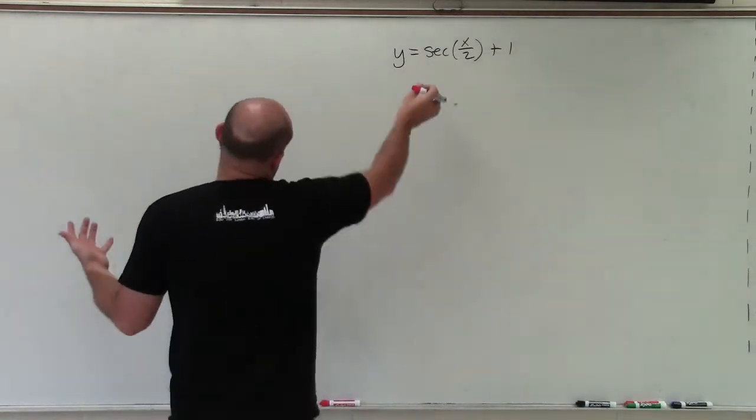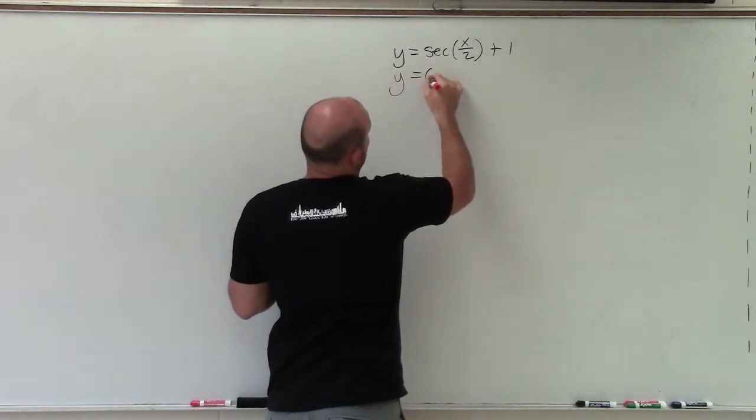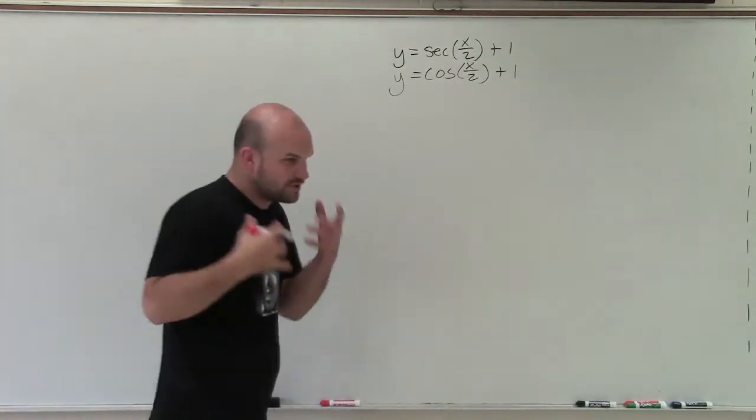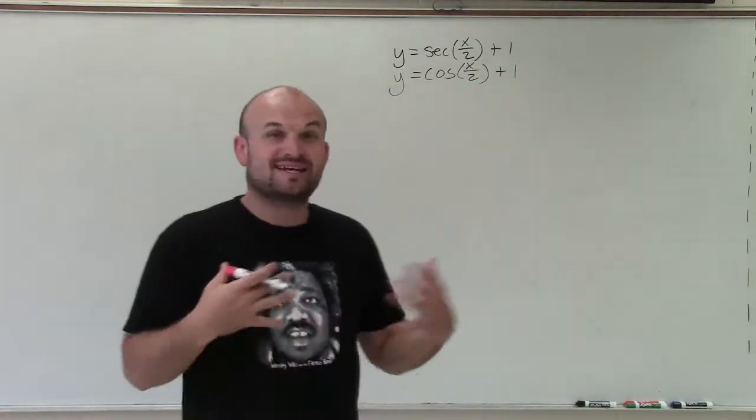So the reciprocal function of secant is going to be cosine. So I can write as y equals the cosine of x divided by 2 plus 1. And what we're going to do is we're going to graph cosine real quick, and then we'll get into secant.